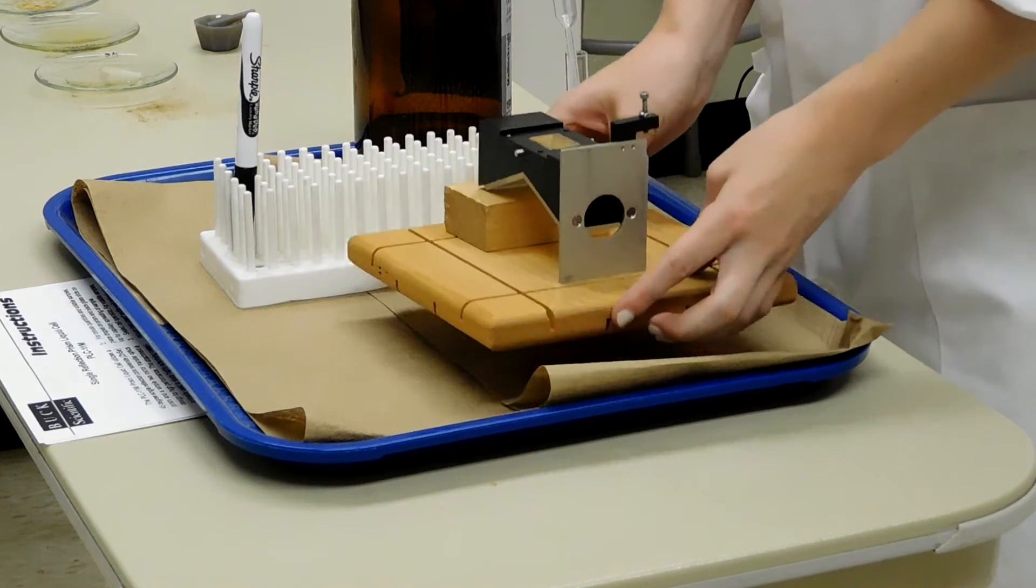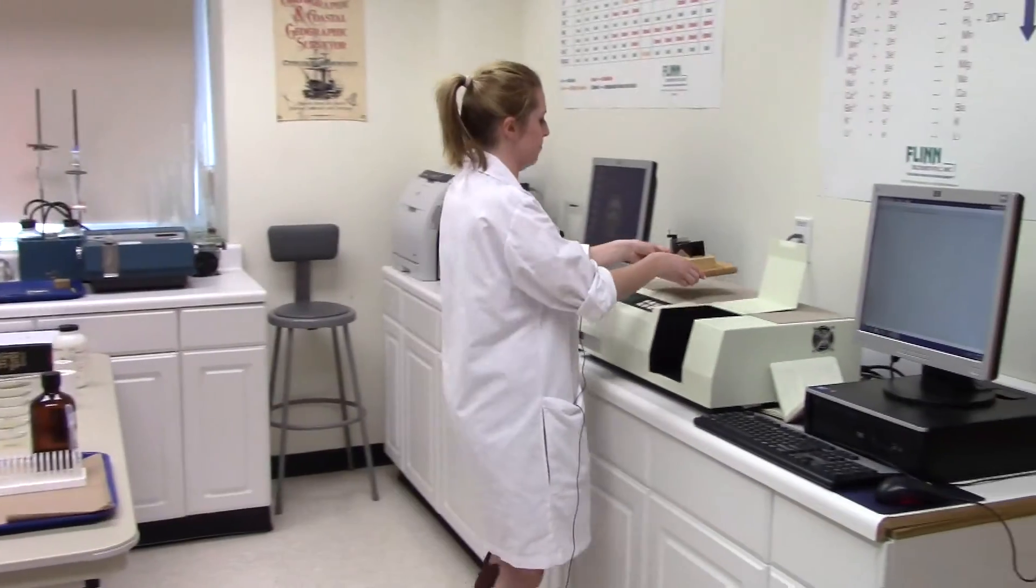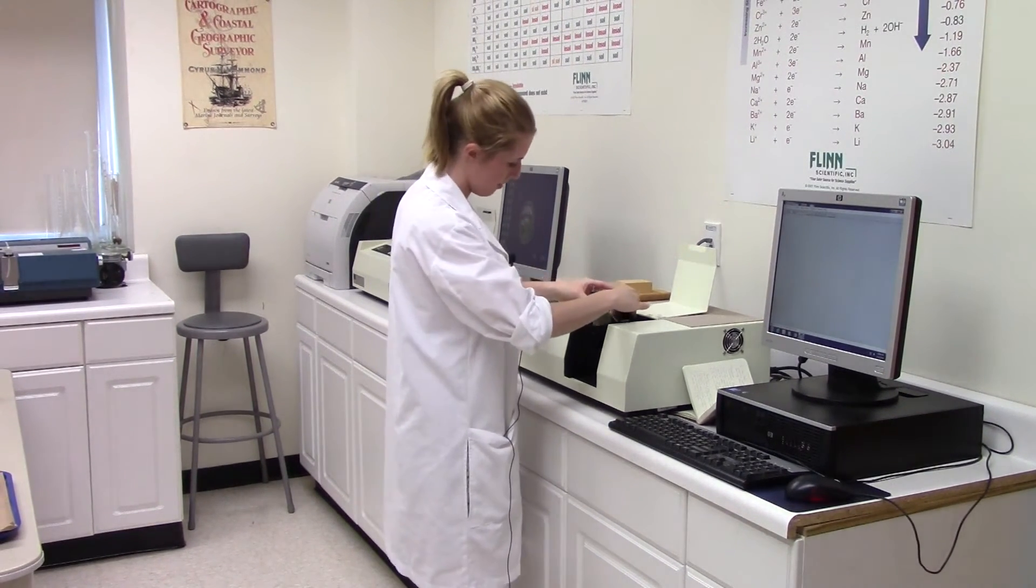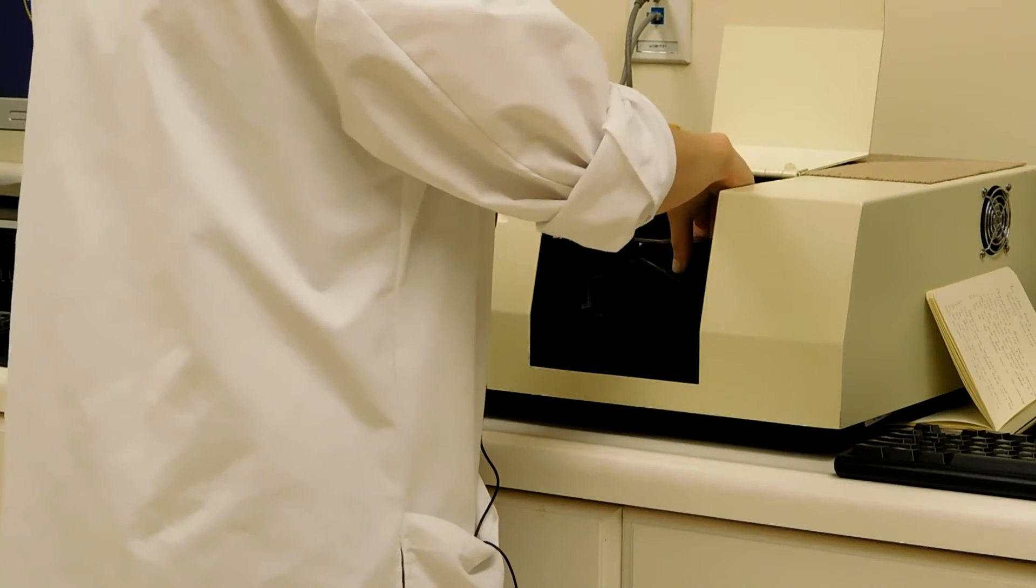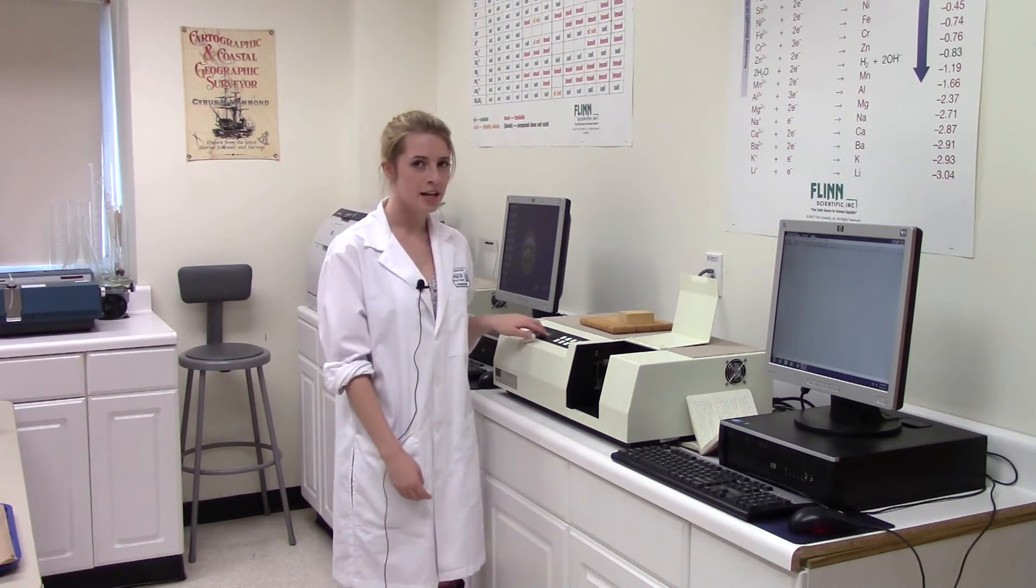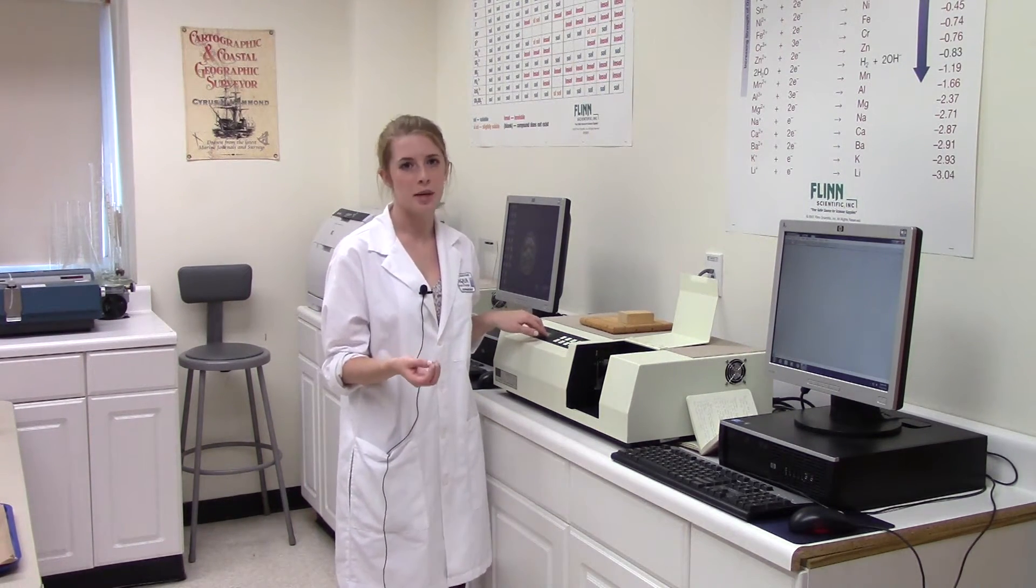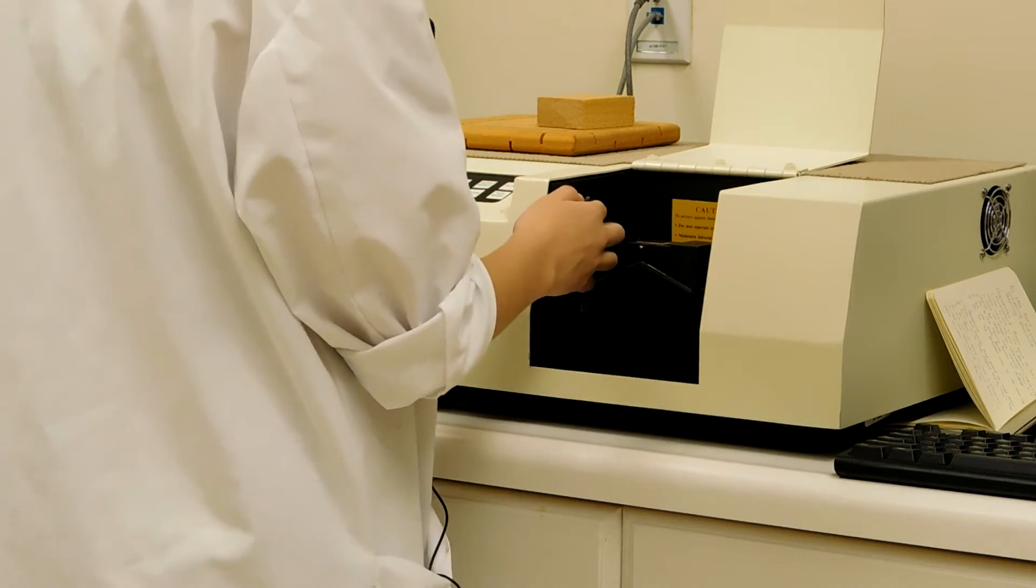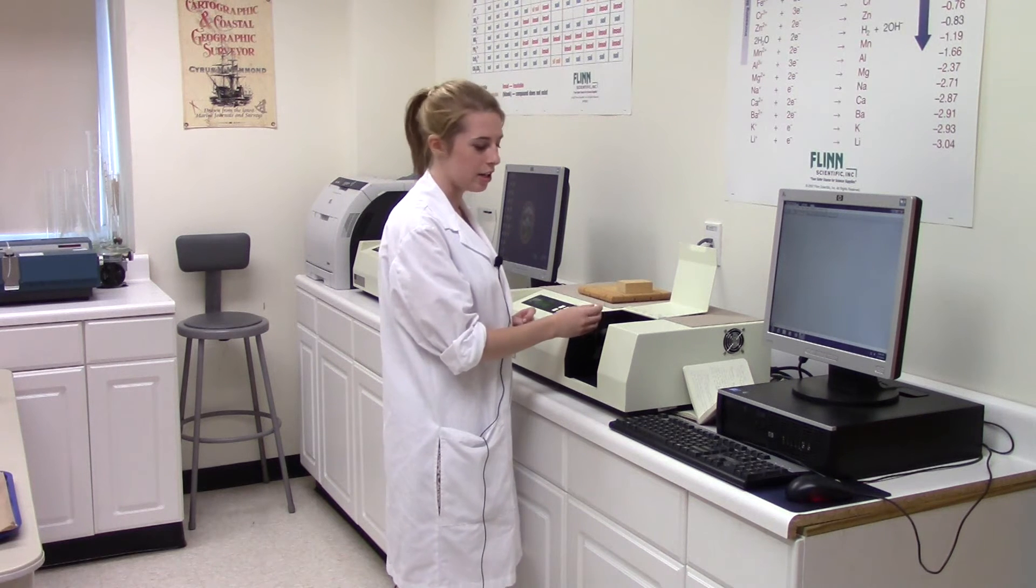Next you want to bring the carrier over to the instrument. Take the whole thing and just slide it in. After you slide it in, it's important to check the percent T. You want it to be at the percent T of the lambda max for the solution you're testing. If it's not at this, you can use the little screw right here and screw it and it'll help change it.